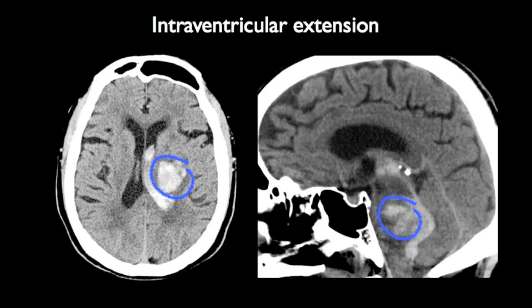The location of hypertensive hemorrhages deep within the brain and usually adjacent to the ventricles makes them prone to extend into the ventricular system. On the first image we can see a left-sided basal ganglia hemorrhage extending into the left lateral ventricle. On the second image, a pontine hemorrhage extends posteriorly into the fourth ventricle and extends superiorly through the aqueduct of Silvius and into the third ventricle.